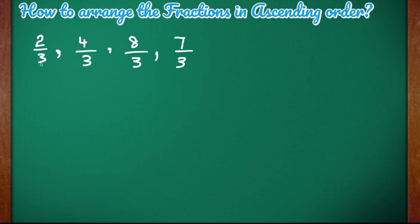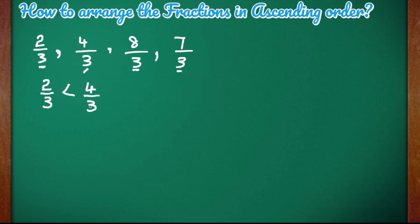To know which fraction is smallest, we have to see what type of fractions these are. These fractions are like fractions because their denominators are same. As you can see, all the fractions here have the denominator 3. So these are like fractions, and the fraction with the smallest numerator is the smallest fraction. So 2 by 3 is the smallest fraction because it has the smallest numerator.